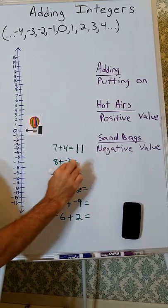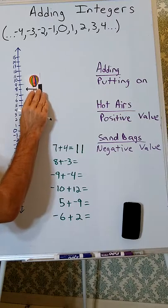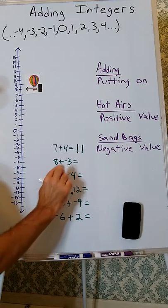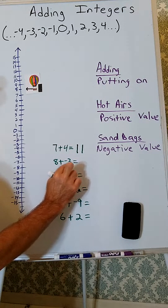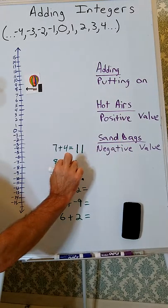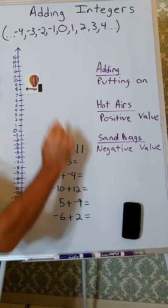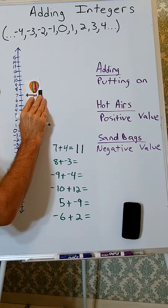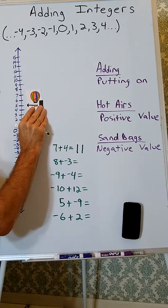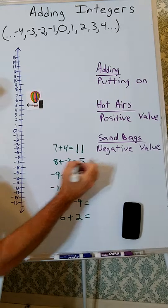Let's try the second one: 8 plus negative 3. I put 8 hot airs on there, it's going to go up 8. Now I'm going to add negative 3 — I'm going to put on 3 sandbags because this 3 is negative. If we put sandbags on, it will cause the balloon to go down. So the balloon will go down 3, and 8 plus negative 3 is 5.